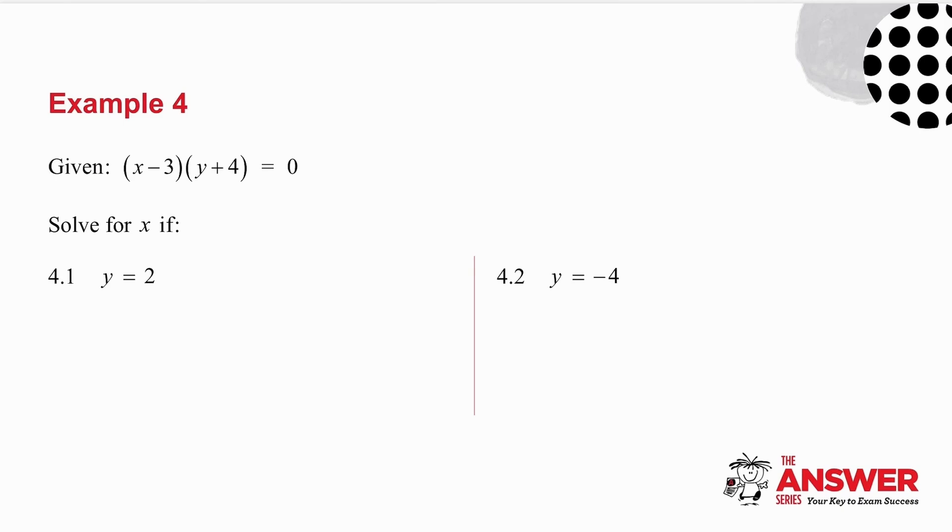Example number four. You're given that x minus 3 times y plus 4 is equal to 0. And they ask you to solve for x if y is equal to 2, firstly, and secondly, if y equals minus 4. I want you to pause the video. I want you to try these two, and then we'll do them together.